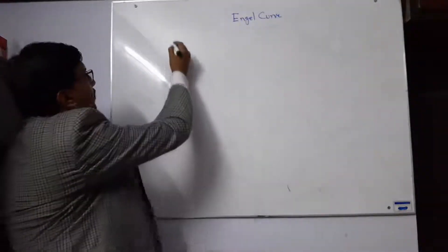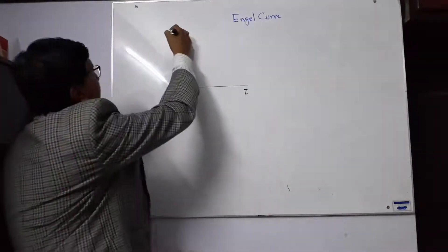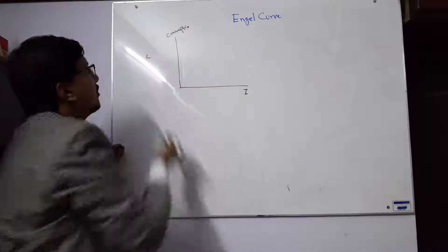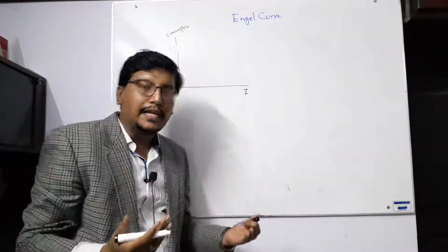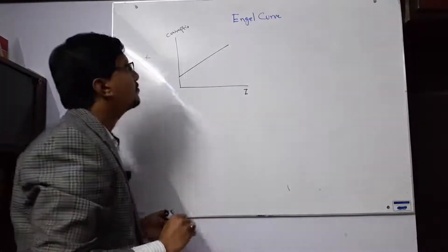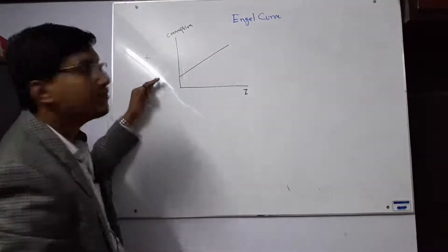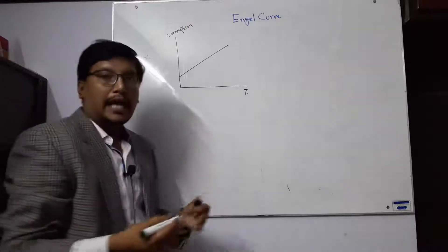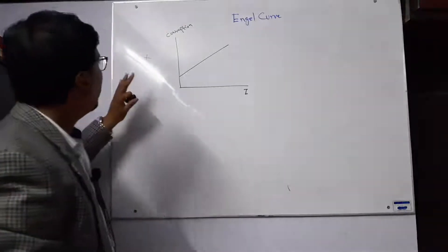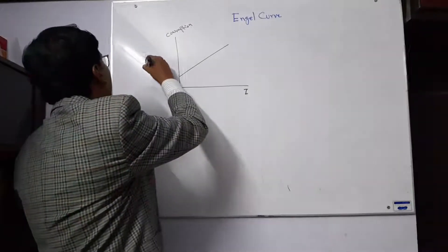Basically, if there is income and there is consumption of good X, the Engel curve says that a positive relationship can be observed. When income increases, the consumption of commodity X increases — a very simple positive relationship. This is called the Engel curve, but this type of behavior will be observed only when X is a normal good.